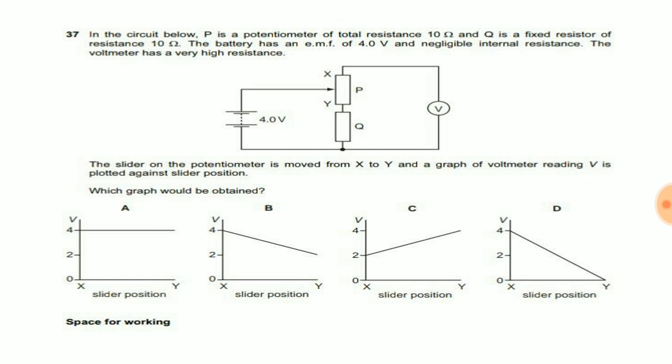Then our task is to find how the value of V in the voltmeter changes on sliding the slider from X to Y. Clearly we know that the total circuit contains three resistors: P, Q, and the resistance of the voltmeter.